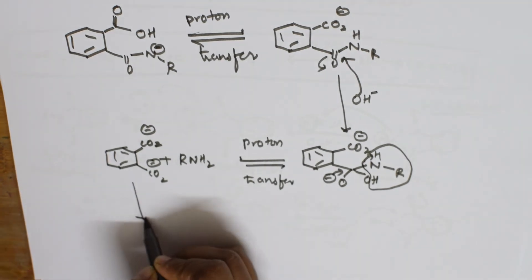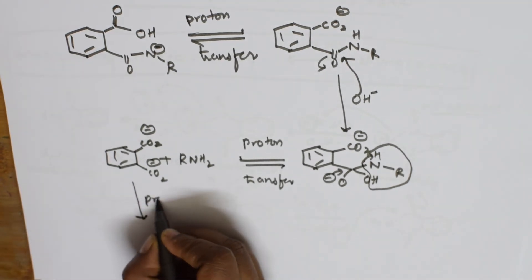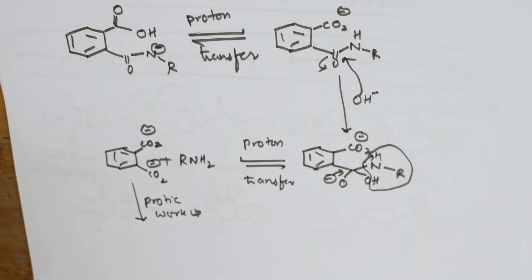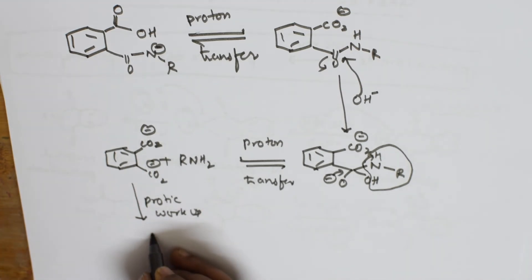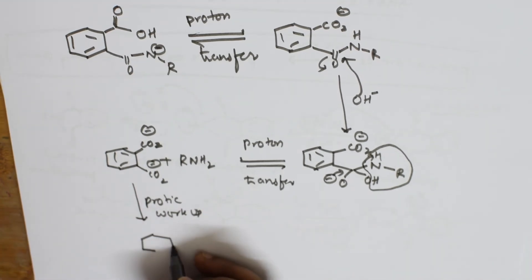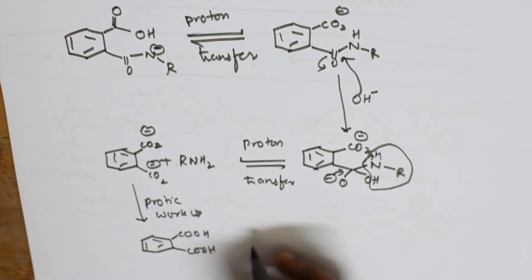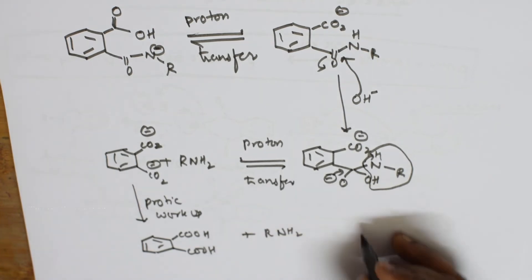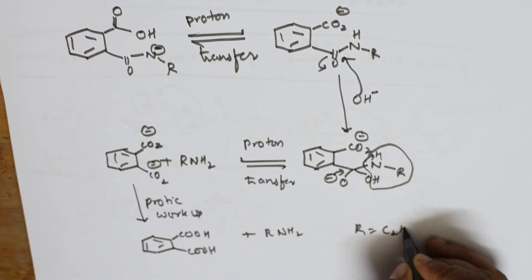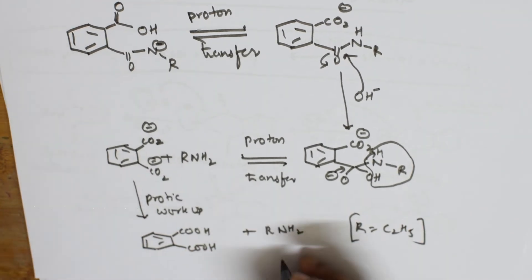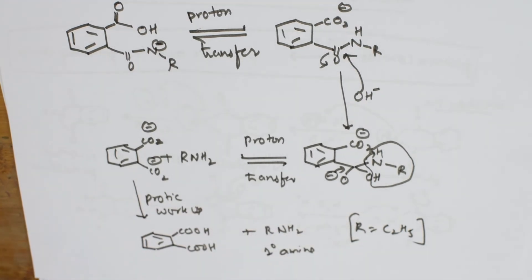We are almost at the end of the steps. There is a protic workup. After protic workup, what do we finally get? You are going to get the benzene ring with COOH and COOH — that is phthalic acid — plus formation of R-NH2, where R is the ethyl group (C2H5). This is phthalic acid, and this is the primary amine. So this is your complete Gabriel phthalimide synthesis.